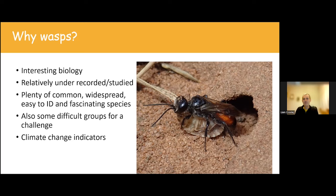You can go out in gardens and record loads of different species just from your garden. If you're looking for more of a challenge, there are also more difficult groups — some are incredibly difficult, and even cutting-edge science is struggling to delineate species. That's where molecular science and DNA technology are starting to come in, trying to sort out what species is what.